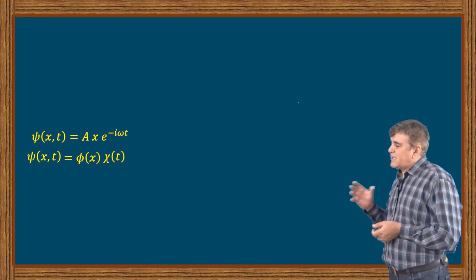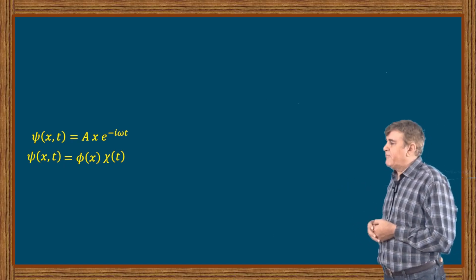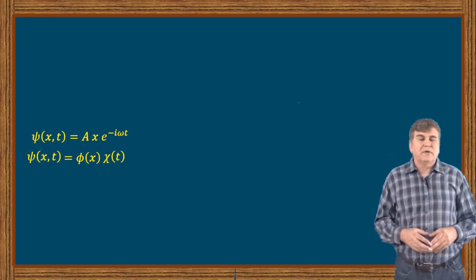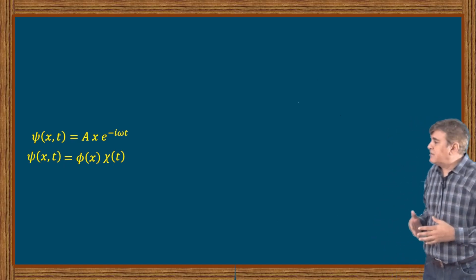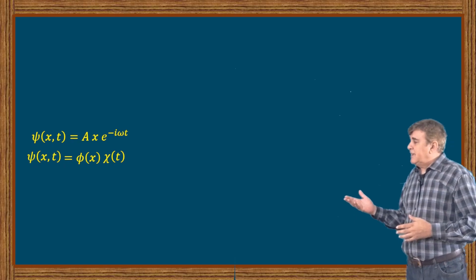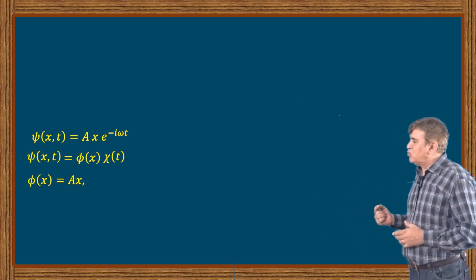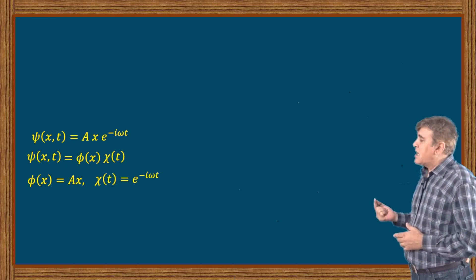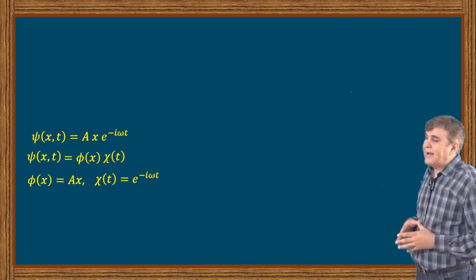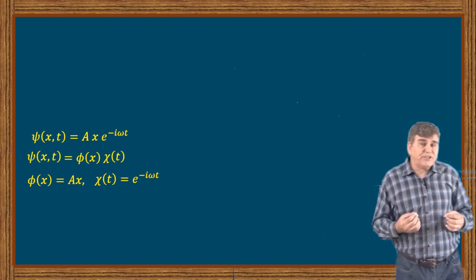In other words, I have written φ(x) = Ax and χ(t) = e^(-iωt). Now, to check the physical validity of this wave function, we use the already known fact about wave functions.